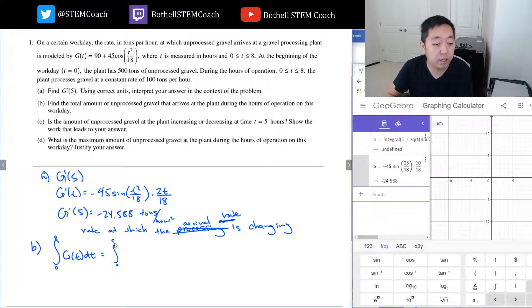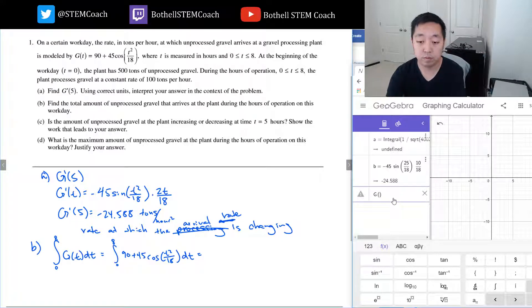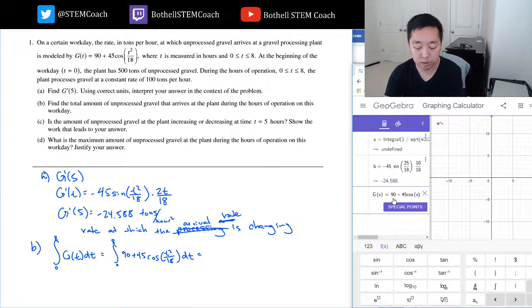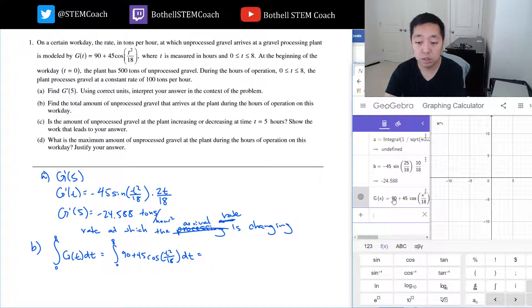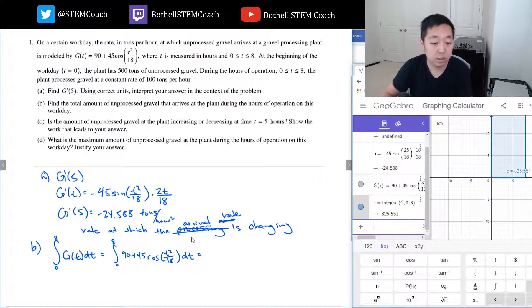So the integral zero to eight, 90 plus 45 cosine t squared over 18 dt. So I'm going to define g(x) equals 90 plus 45 cosine x squared over 18. Now I want the integral of g from zero to eight. So this is 825.551 tons of gravel.